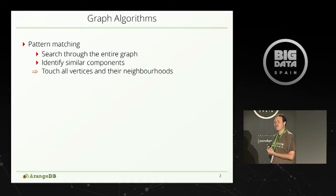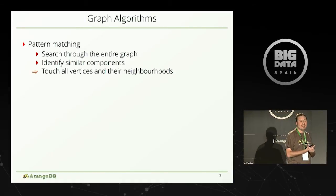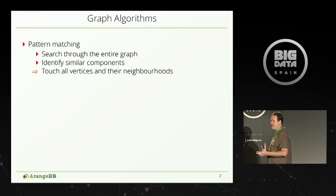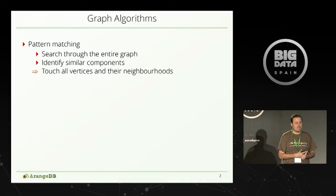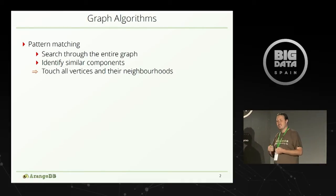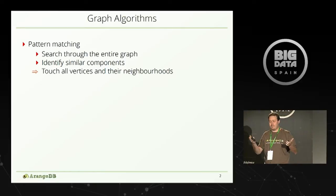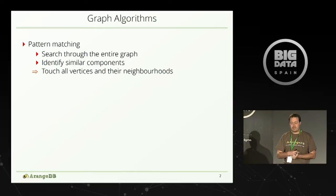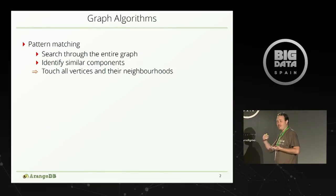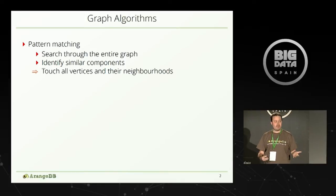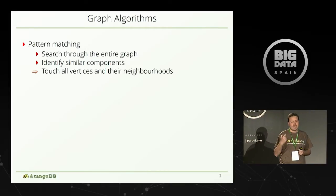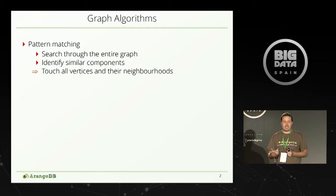Let's talk about graph algorithms — the classical graph algorithms, everything that you might already know. I would declare them into three different parts. First, we have pattern-matching algorithms, where we give a pattern for the graph — for example, A connected to B where the connection is 'married' or something. To get an answer for that query, I have to search the entire graph and identify all pairs of A and B that are married, touching all vertices and their neighborhood if defined in the pattern.